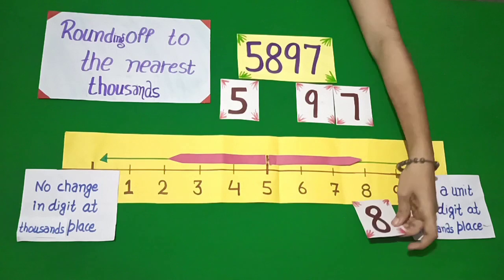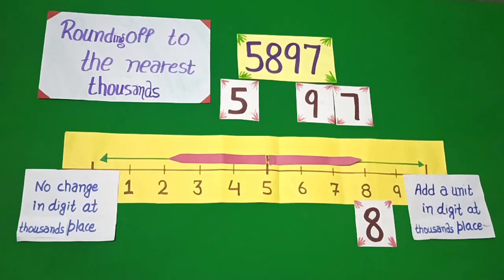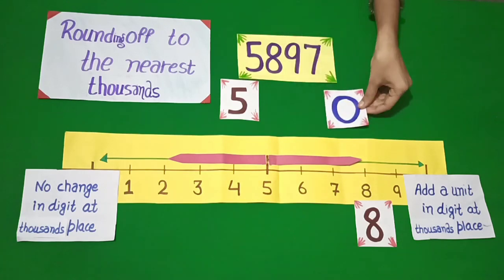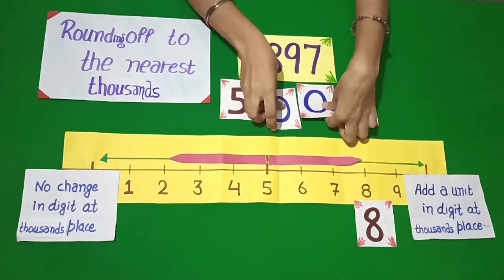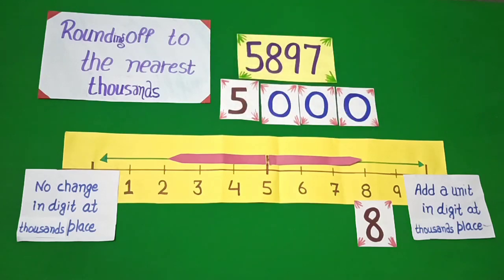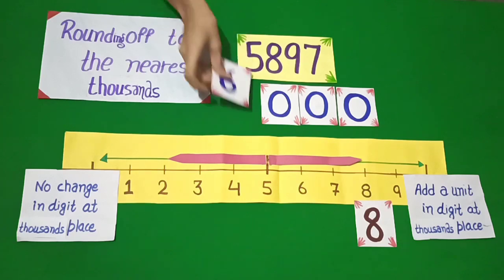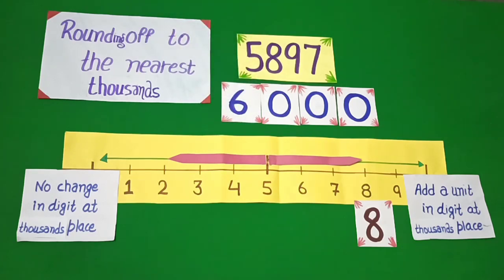We have digit 8 at the 100th place. If you want to round off to the nearest 1,000, put right 3 zeros. See then the 100th place — digit 5 to 9, add a unit to the 1,000th. So dear students, 5,897 rounded off to the nearest 1,000 is 6,000.